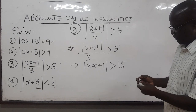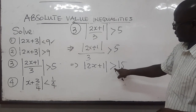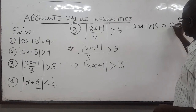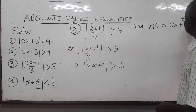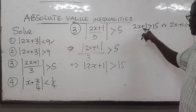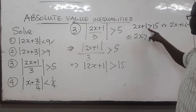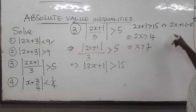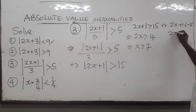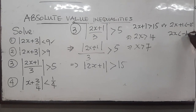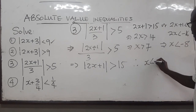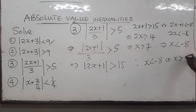I'm going to choose Method 1 by definition again. Because it's greater than, this means 2x plus 1 is greater than 15, or 2x plus 1 is less than negative 15. From the first case, 2x is greater than 14, so x is greater than 7. From the second case, 2x is less than negative 16, so x is less than negative 8. Therefore x is less than negative 8 or x is greater than 7.